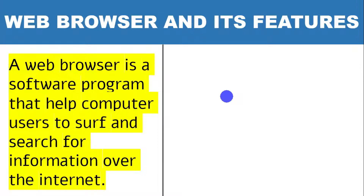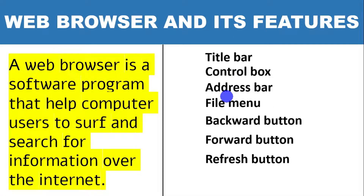These browsers have features or characteristics that enable users to control the window of the browser on their computer desktop. We have the title bar, the control box, the address bar, the file menu, the back button, the forward button, the refresh button, and the home page. We will have a practical look at three browsers on our computer desktop and identify the similar features that help users to control the browser window.